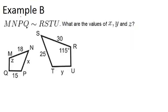We have MNPQ is similar to RSTU. What are the values of X, Y, and Z? So because these two quadrilaterals are similar, it means all their corresponding angles must be congruent.